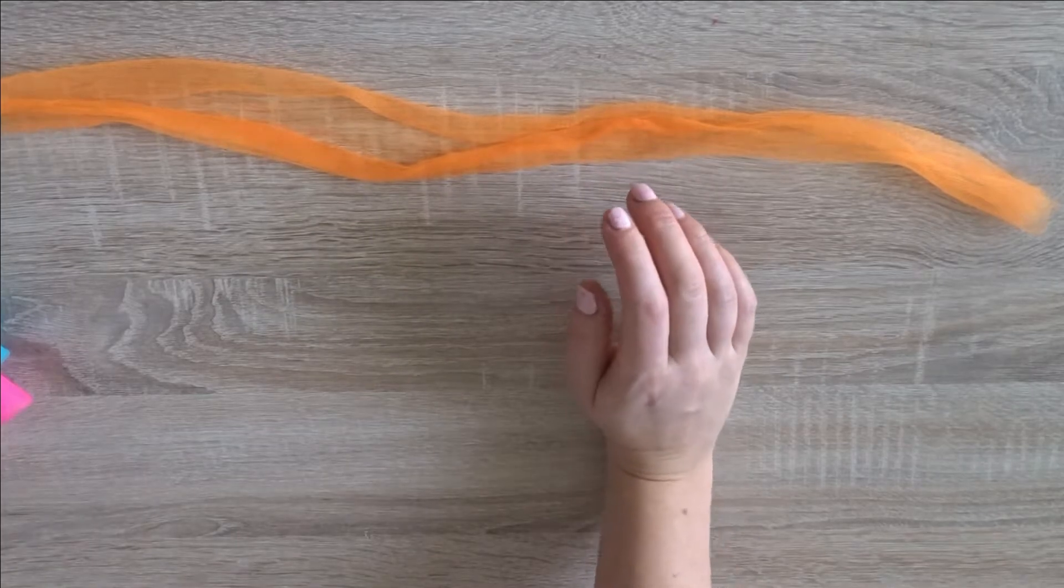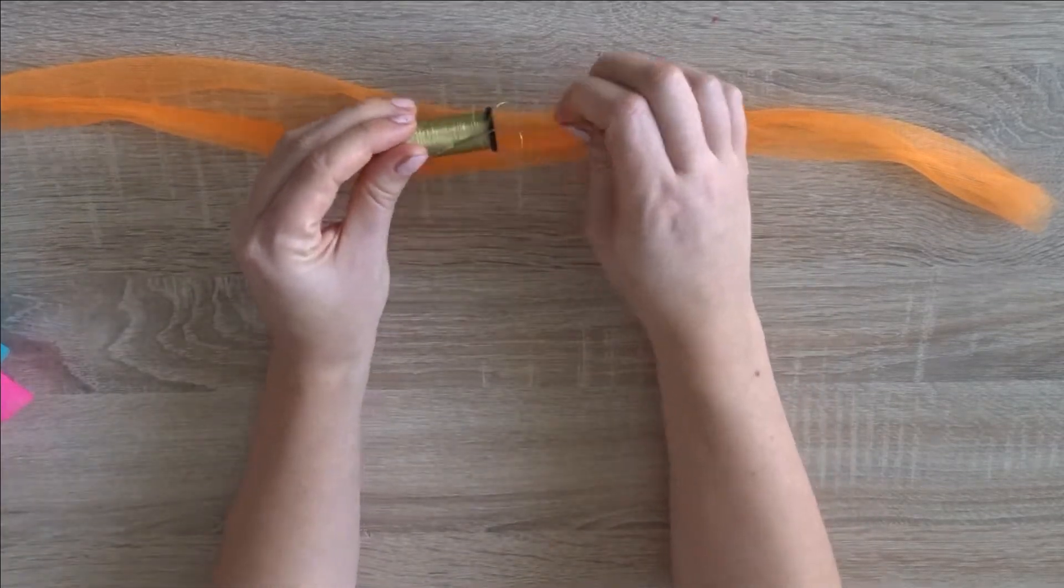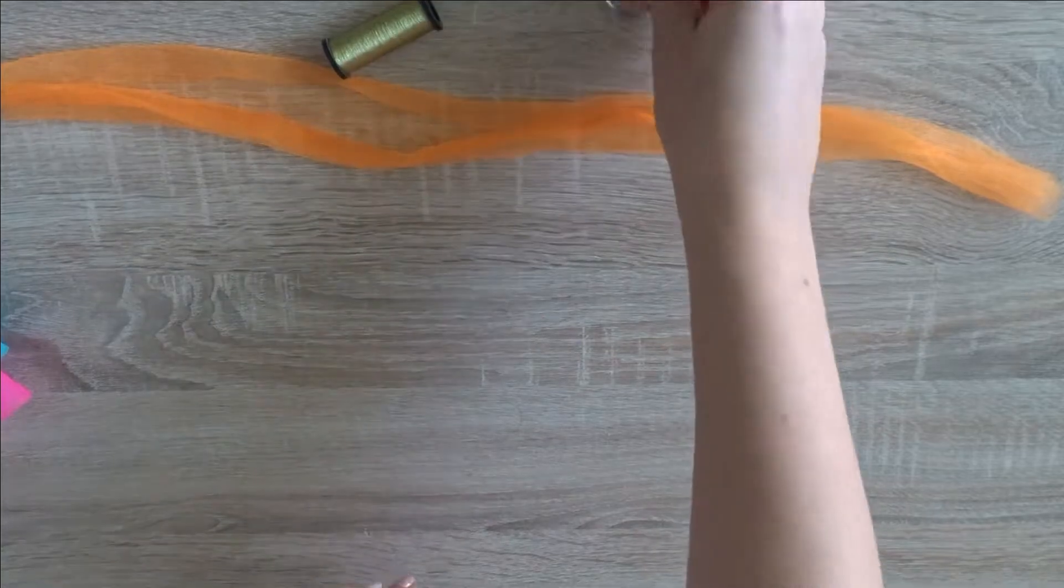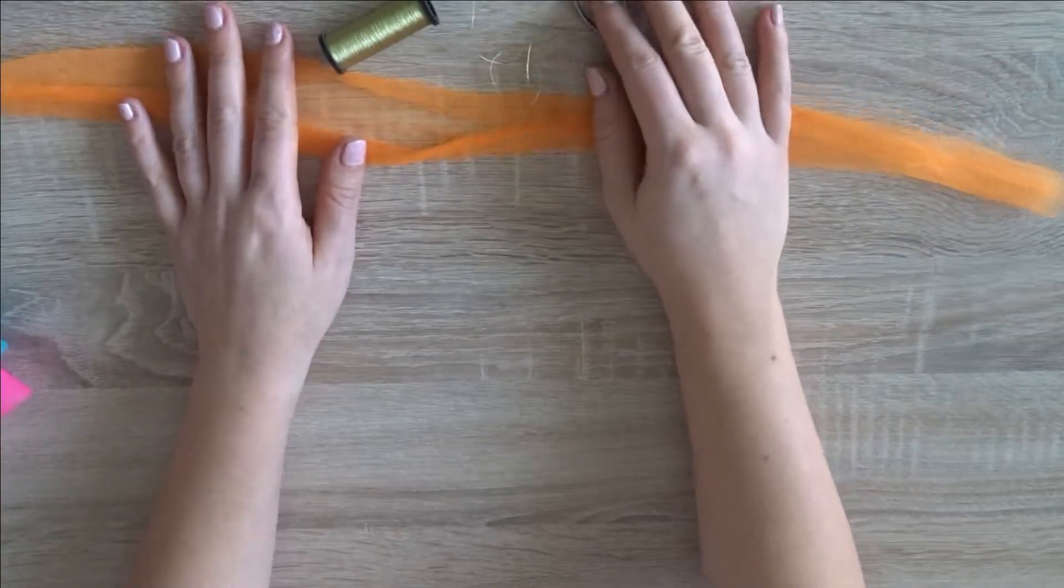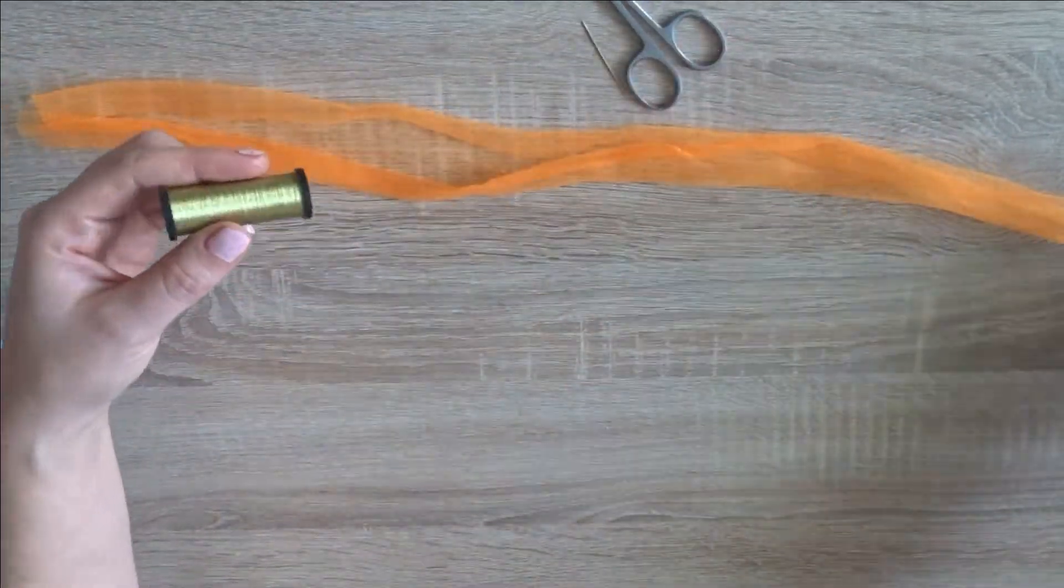What you will need? A long, really long streak of tulle material, silver or golden thread, needle and scissors.